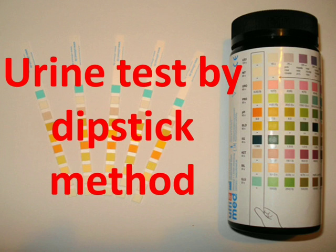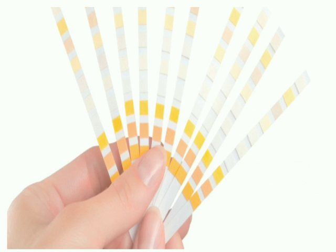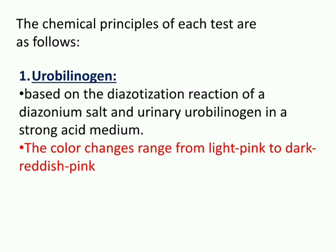In this video we are discussing urine test by dipstick method, or chemical examination of urine using a dipstick. The dipstick we use is reacted with the solid phase tri-reagent areas attached to a plastic holder. This dipstick contains reagents for detection of urobilinogen, glucose, ketones, bilirubin, protein, nitrite, pH, blood, specific gravity, leukocytes, and ascorbic acid.